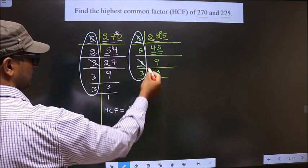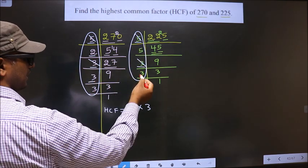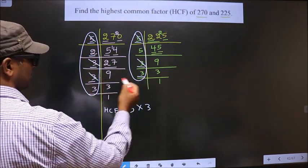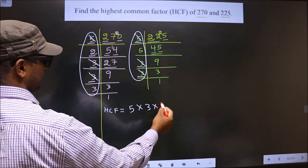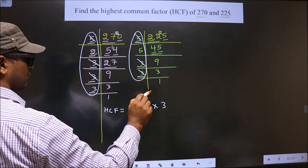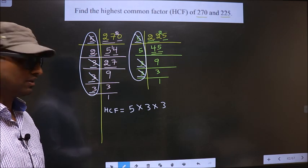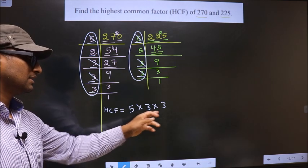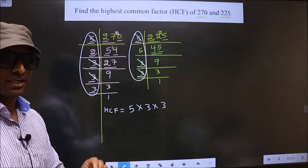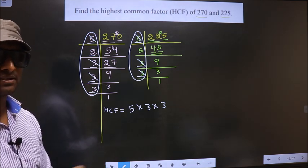So you cut 3 and write here. Next number is 3. Do we have 3 here? No. No more numbers are left. Therefore, now you multiply these numbers. Whatever number you get, that is your HCF.